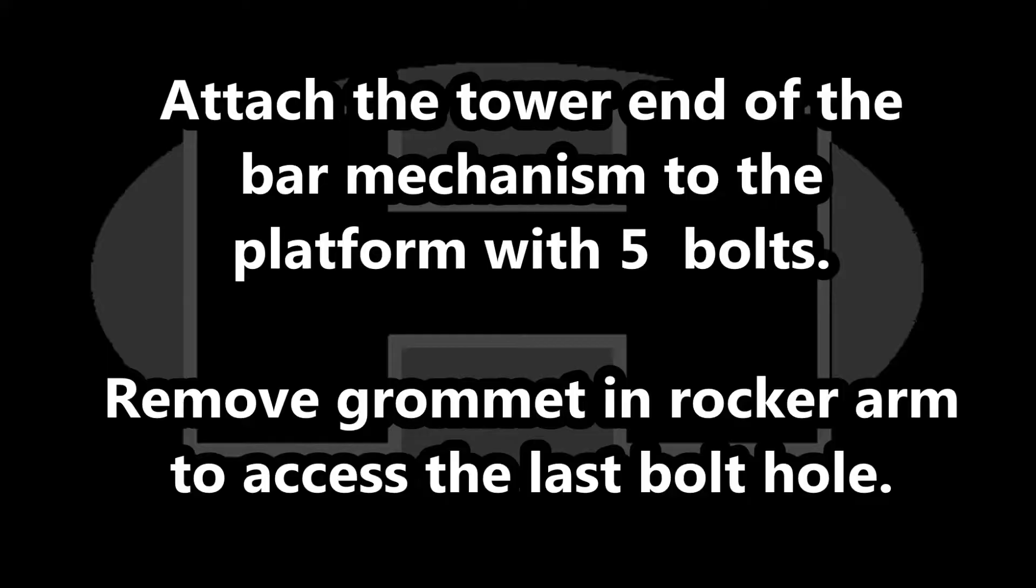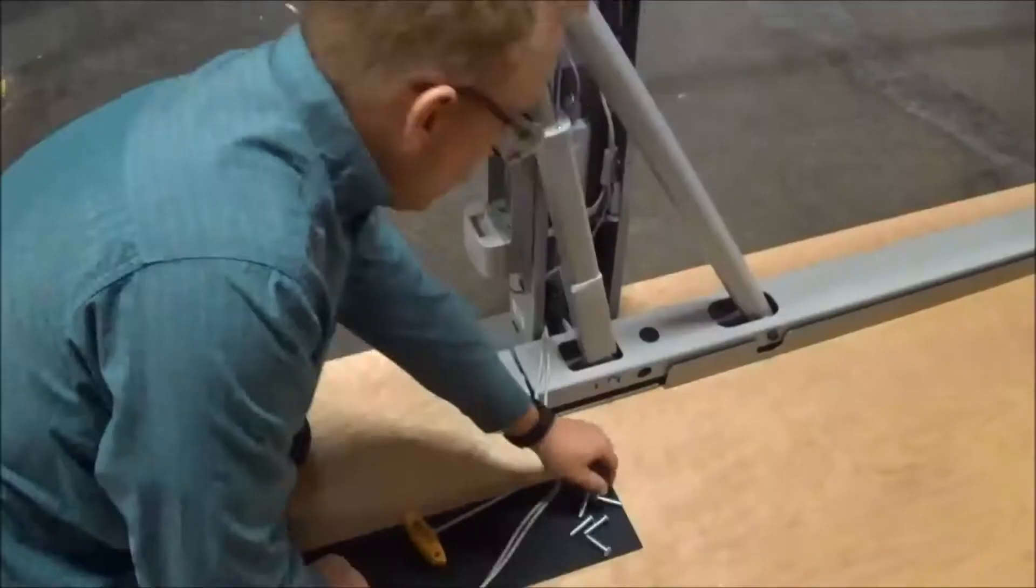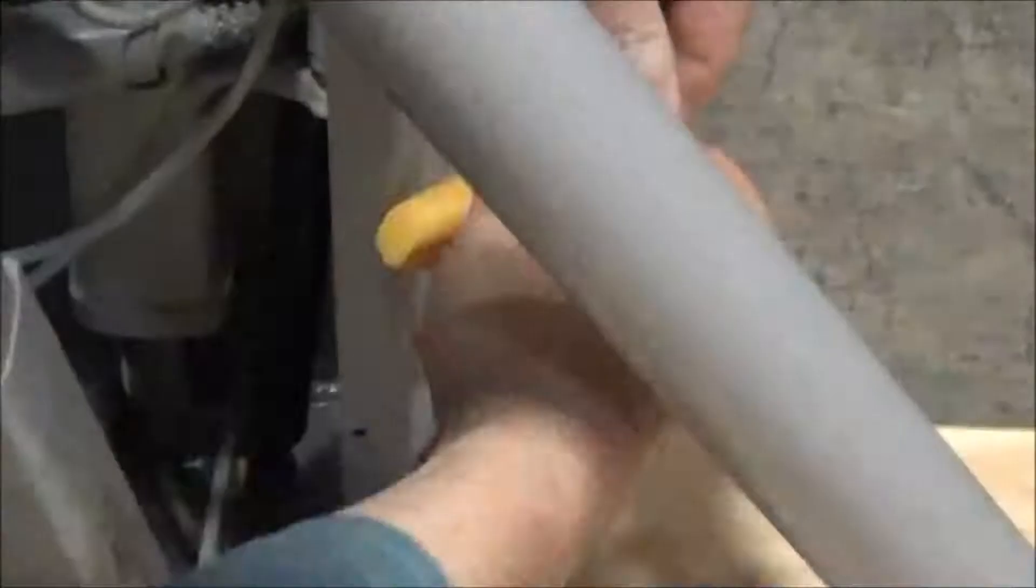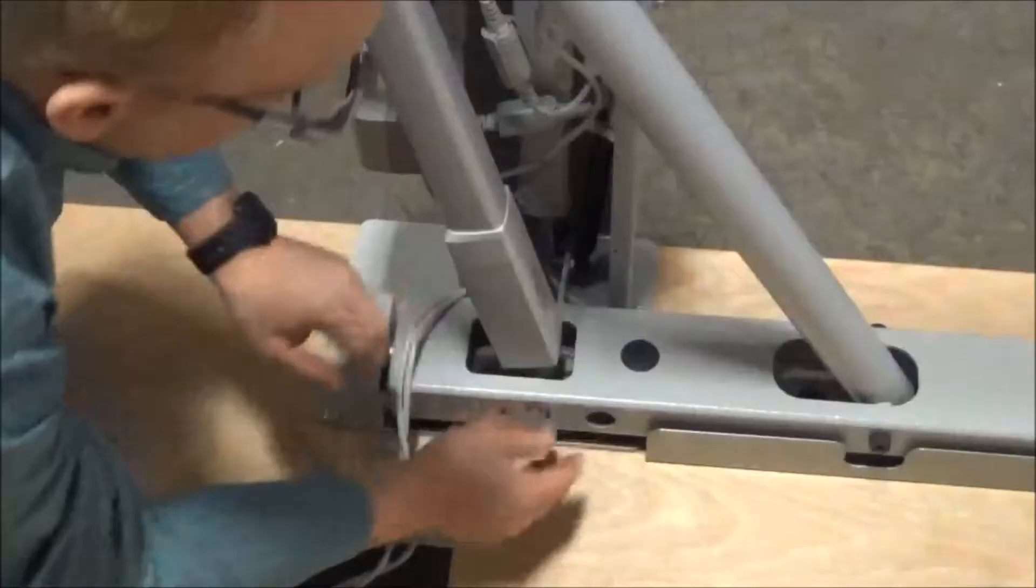Attach the control tower end of the bar mechanism to the platform with five bolts. You'll need to remove the grommet and the rocker arm to access the last bolt hole. Refer to the photo in the instruction sheet for the location of the bolt holes. One kind of sits inside the tower. Stick your finger in the hole in the side of the rocker arm to pop the grommet out. The T-handle wrench will grip the bolt for easy insertion into the hole.